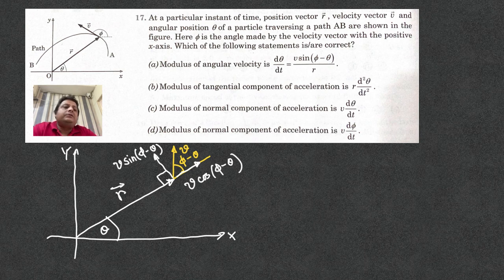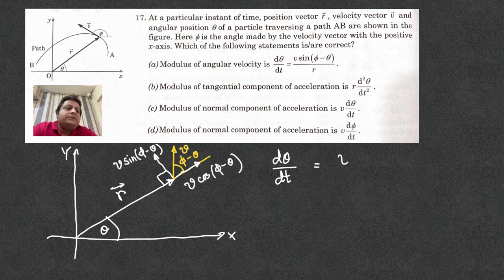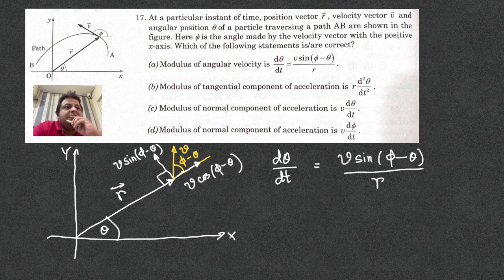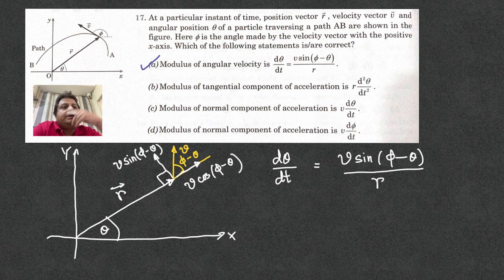So, actually, angular velocity, you know, it is d theta dt. So, angular velocity happens to be this v sine of phi minus theta divided by the distance r. So, does it match? Yeah, I think so. So, option a is correct.